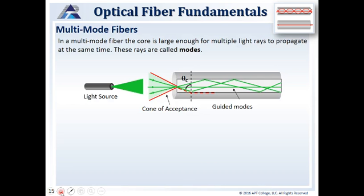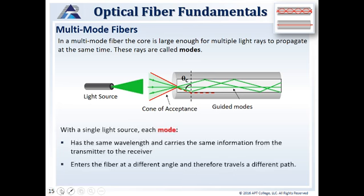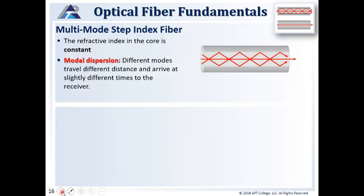Multi-mode fibers: in a multi-mode fiber, the core is large enough for multiple rays of light to propagate at the same time — these rays are called modes. With a single light source, each mode has the same wavelength and carries the same information from the transmitter to the receiver. Light enters the fiber at different angles and therefore travels a different path. When traveling different paths, modes end up traveling different distances, which results in modal dispersion.